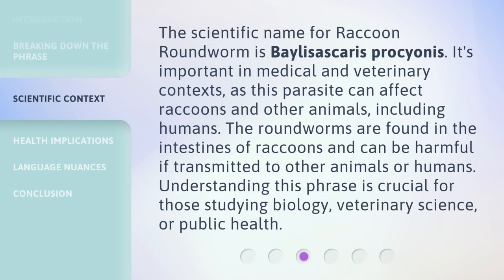The scientific name for raccoon roundworm is Baylisascaris procyonis. It's important in medical and veterinary contexts, as this parasite can affect raccoons and other animals, including humans. The roundworms are found in the intestines of raccoons and can be harmful if transmitted to other animals or humans. Understanding this phrase is crucial for those studying biology, veterinary science, or public health.